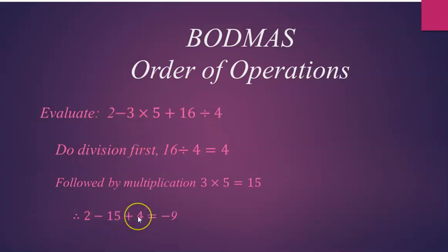But here we don't waste time saying that we have to do addition first. No, addition and subtraction have the same strength. When we are left with addition and subtraction, we follow the signs the way they appear. So 2 minus 15 plus 4 gives negative 9. Thank you.